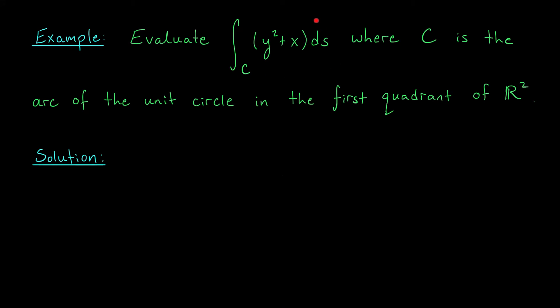All right, let's see if we can evaluate this line integral over the curve C of y^2 + x ds. Here C is the arc of the unit circle in the first quadrant of R^2. Okay, now I remember from the last slide that the key to evaluating these integrals is to first parametrize your curve. So here we're dealing with an arc of the unit circle, and if memory serves me right, the unit circle can be parametrized by (cos t, sin t). So let's write this down. C is traced out by the curve r(t) = (cos t, sin t). Of course, we don't want to go all the way around the circle. We just want the arc in the first quadrant, which is going to correspond to t between 0 and π/2. Believe it or not, the hard part is done.